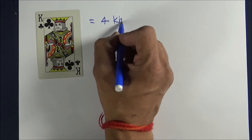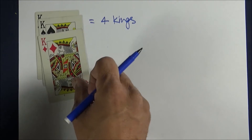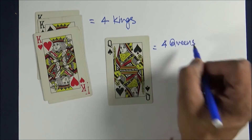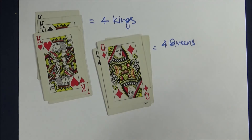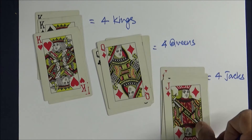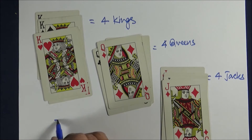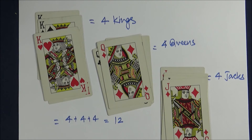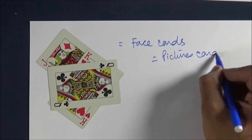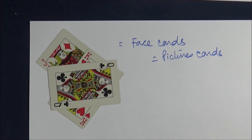The other very important thing is the face cards. There are 12 face cards: four kings, four queens, and four jacks. Together they are 12, one from each suit. Half are red and half are black. Face cards are also known as picture cards, because out of 52 only 12 cards have a picture.